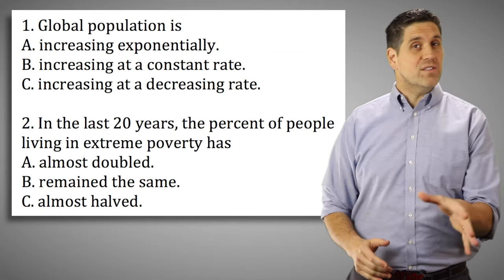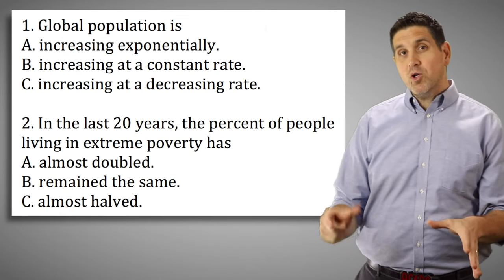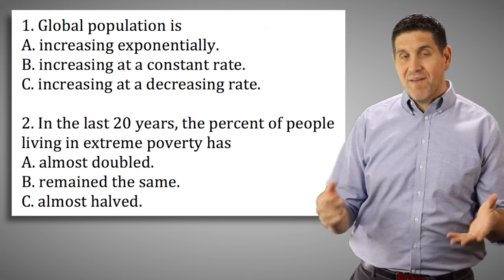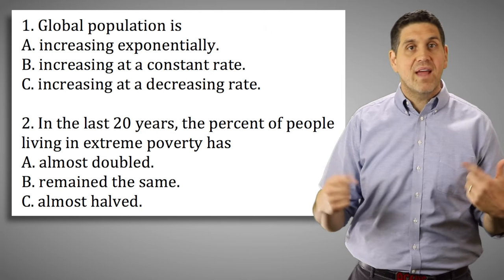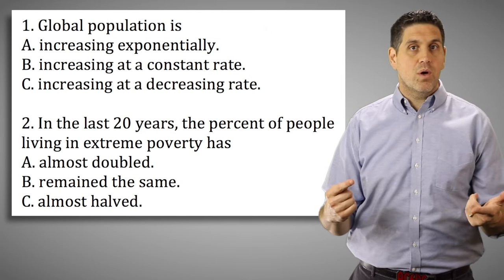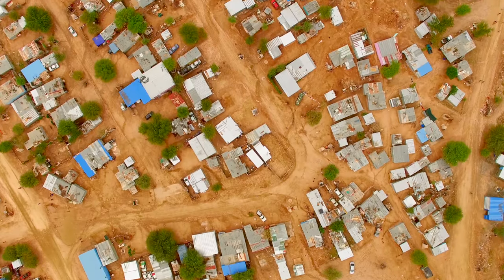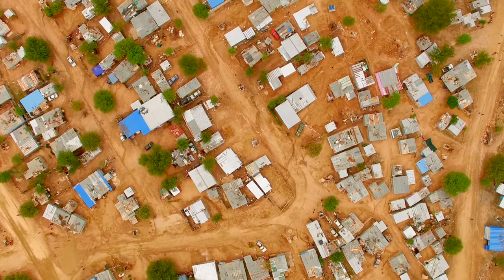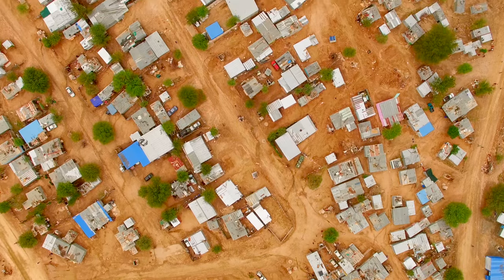What Rosling found was that most people get these questions wrong because they have preconceived ideas about the world. They think the world is the same as it was 50 or 20 years ago.